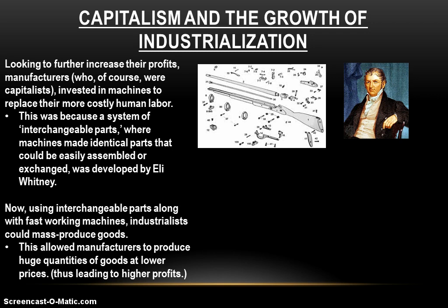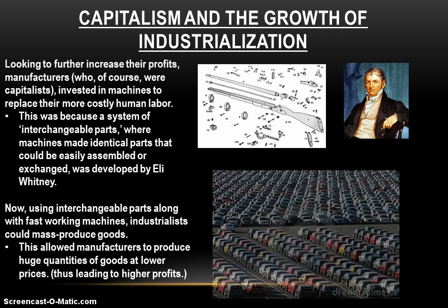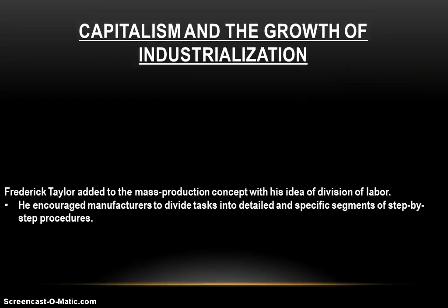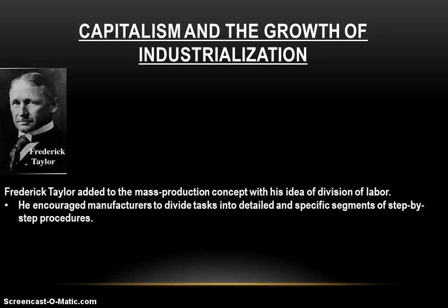Using interchangeable parts along with fast-working machines, industrialists can mass produce goods. Mass production allows manufacturers to produce huge quantities of goods at much lower prices, and when it costs less to make something, you make more money. Capitalism and the profit motive are driving all of this industrial growth. Some years later, Frederick Taylor would add to this mass production concept with his idea of the division of labor.